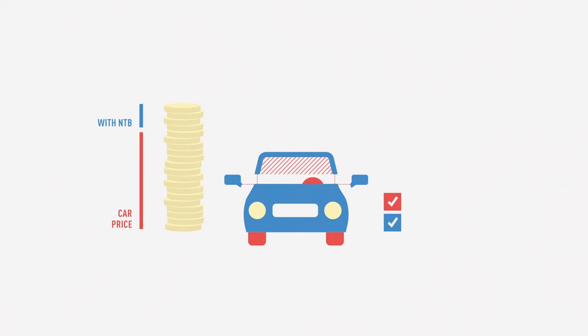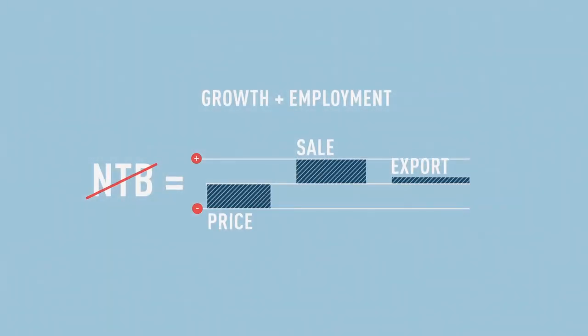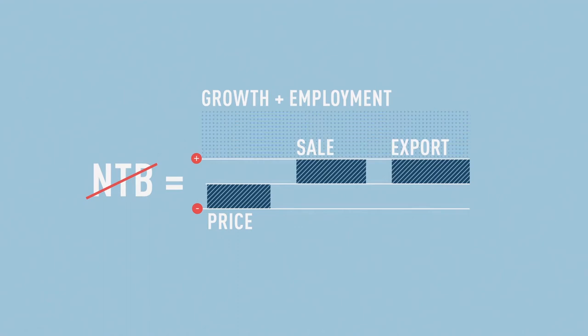If these barriers, standards and regulations could be harmonized or abolished, then some of the manufacturing costs of the products in question would go down by a significant amount. This in turn would result in lower prices, increased sales and more exports, and ultimately positive effects on growth and employment.